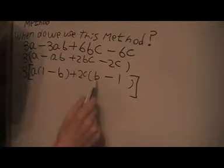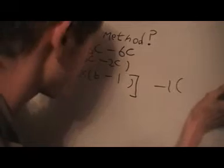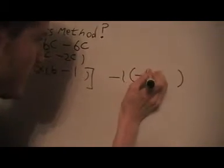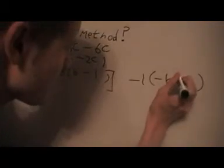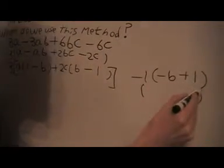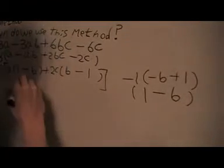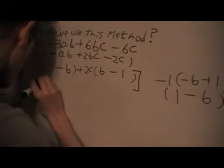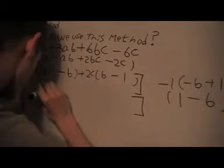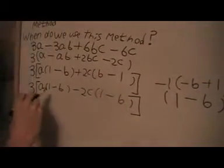Notice that (b - 1) isn't the same as (1 - b), but I can factor out -1 from (b - 1) to get -(1 - b). That makes both brackets the same. So I multiply the 2c by -1, giving -2c(1 - b), and now both terms share the common factor (1 - b).